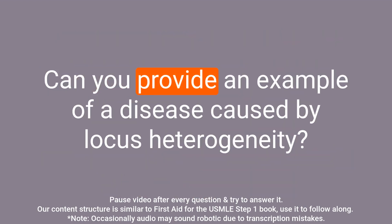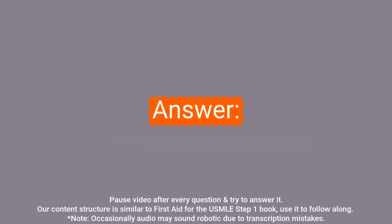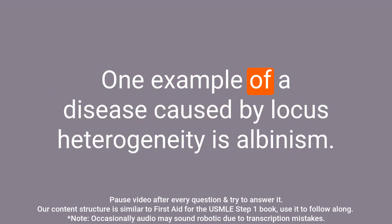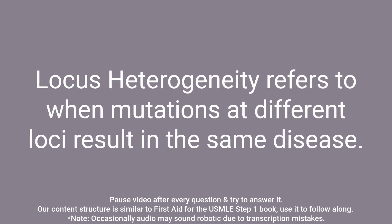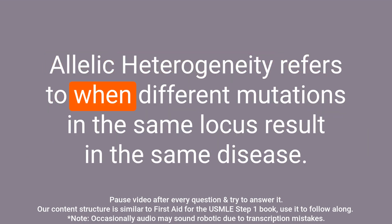Question: What is the difference between locus heterogeneity and allelic heterogeneity? Answer: Locus heterogeneity refers to when mutations at different loci result in the same disease, while allelic heterogeneity refers to when different mutations in the same locus result in the same disease.